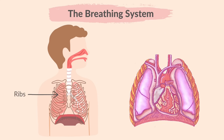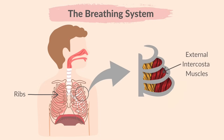These are capillaries surrounding the alveoli, which are blood vessels through which blood passes. These are ribs, the bones that protect the lungs among other organs. These are intercostal muscles found between ribs, which control the movement of ribs during breathing. The external intercostal muscles are on the outside of the rib cage, and the internal intercostal muscles are on the inside. Both are important in moving the rib cage during inhalation and exhalation.